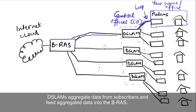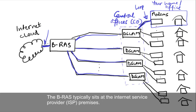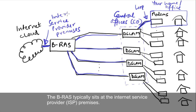DSLAMs aggregate data from subscribers and feed aggregated data into the BRAS. The BRAS typically sits at the Internet Service Provider, or ISP, premises.